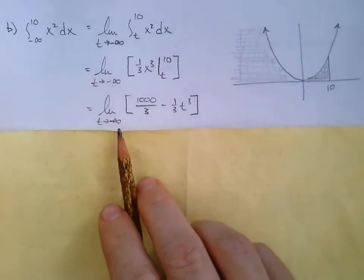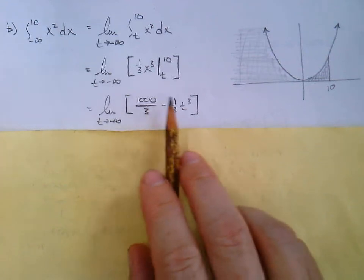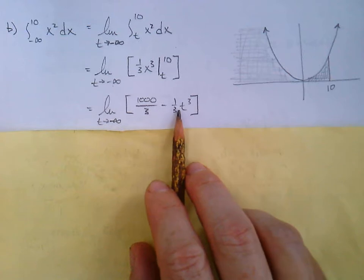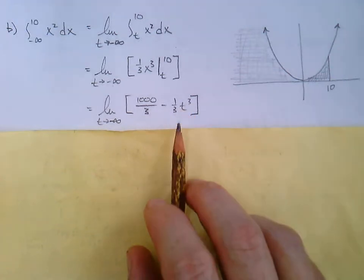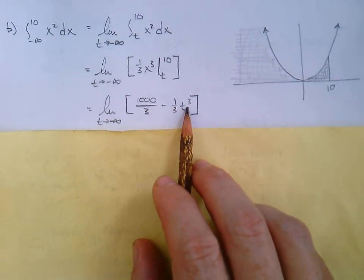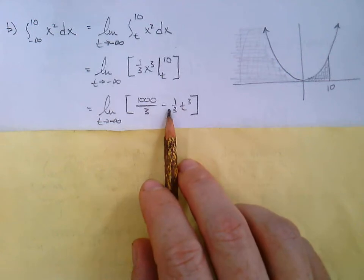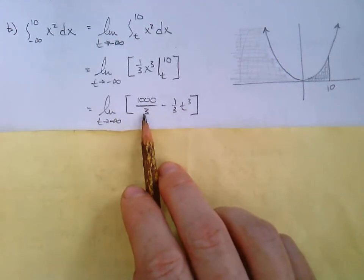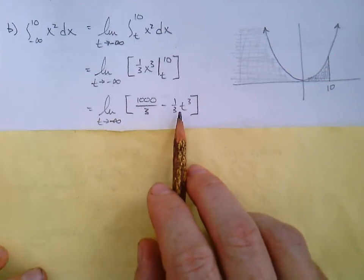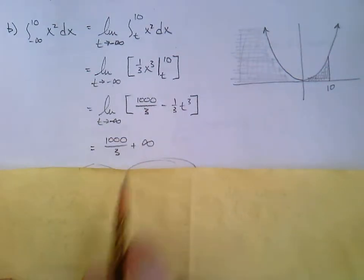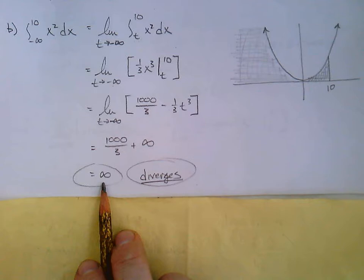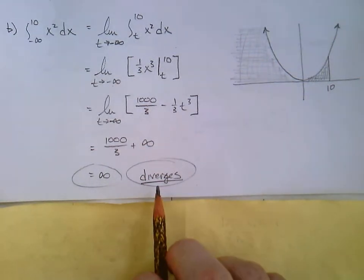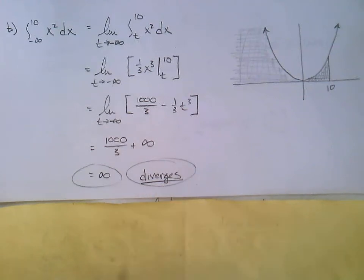As t approaches negative infinity, if we put a negative infinity in right there, we'd have negative infinity to the third. That would still be negative infinity, but then we're going to multiply that with negative one third. So that's going to change it back to positive and 1,000 over 3 plus infinity. We've got infinity. And so if there was that follow-up question here, we would say this integral diverges.